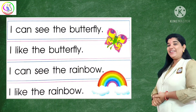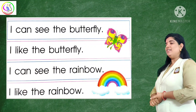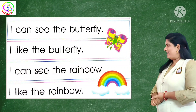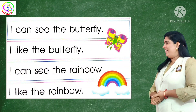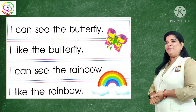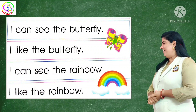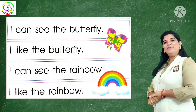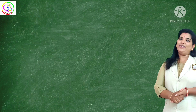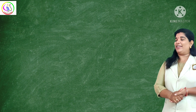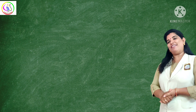I can see the butterfly. I like the butterfly. The next one: I can see the rainbow. I can see the rainbow. I like the rainbow. I like the rainbow. Now it's your turn to read by your own. Here is your page. Now start reading.